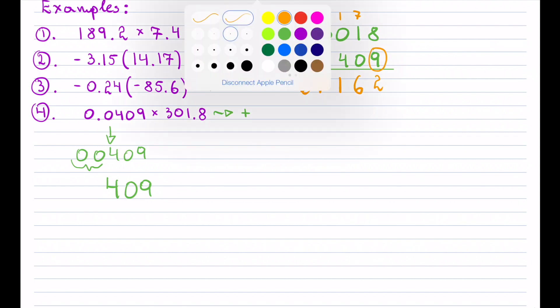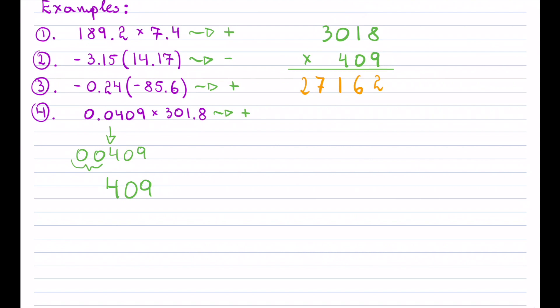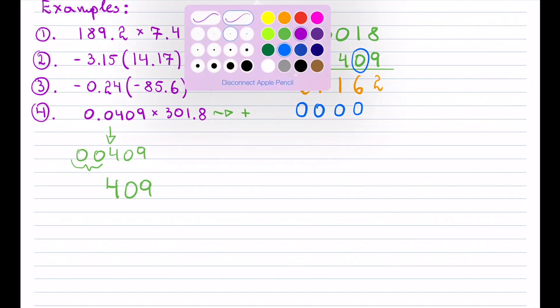We now have a 0 digit — multiplying by 0 just gives zeros. If you're systematic and do it the same way as the previous examples, just multiply each digit by 0: 0 times 8, 0 times 1, 0 times 0, 0 times 3 — you just get a row of zeros.